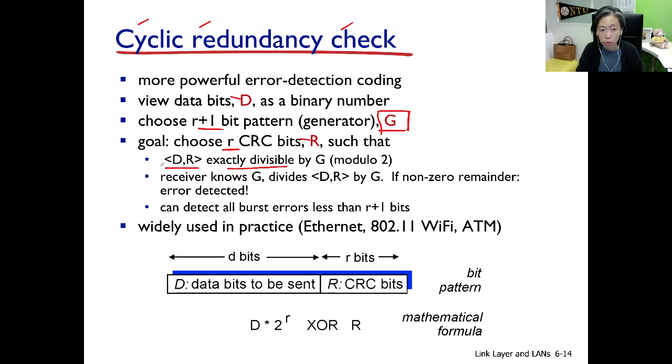The center next will send not just the data, but also the R bits out. So the whole sequence will be sent to the receiver. Therefore, a receiver will receive the whole sequence and try to divide it by G again. Now, if there are no bit errors here, what should the remainder be like?